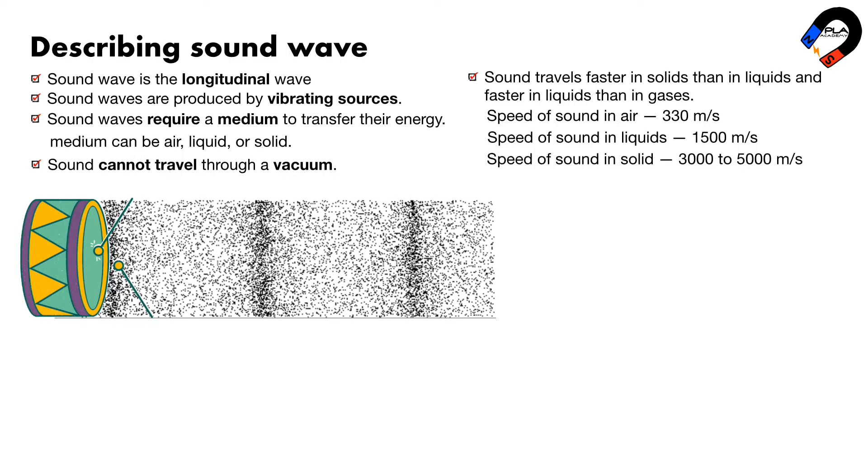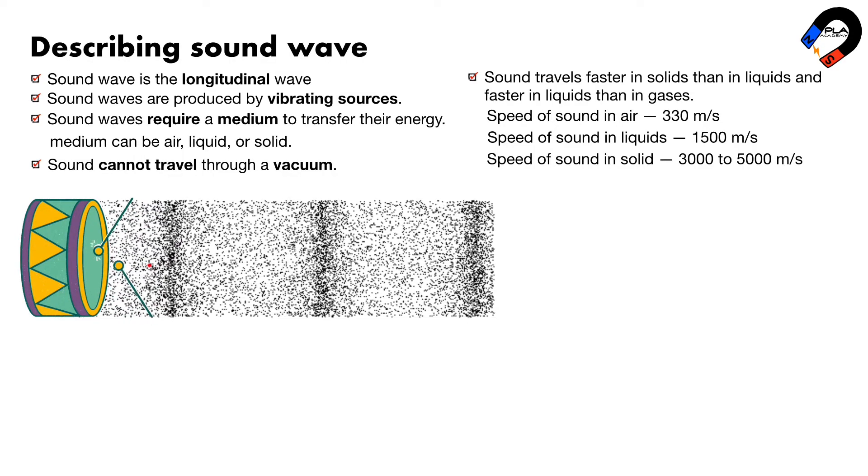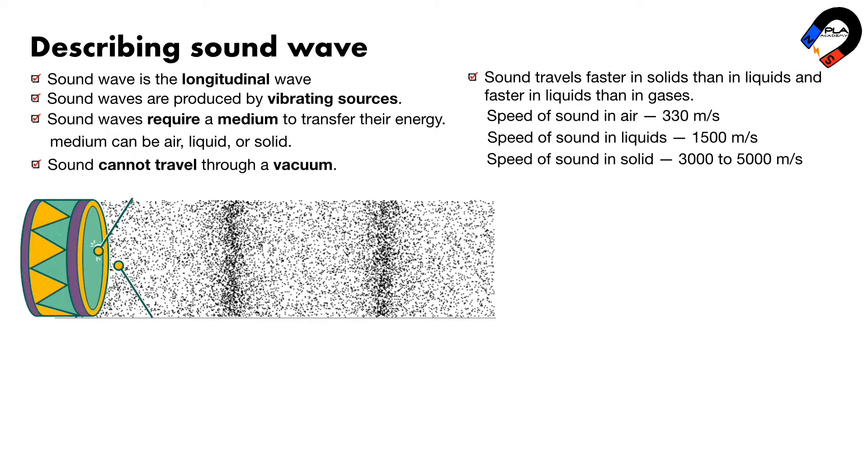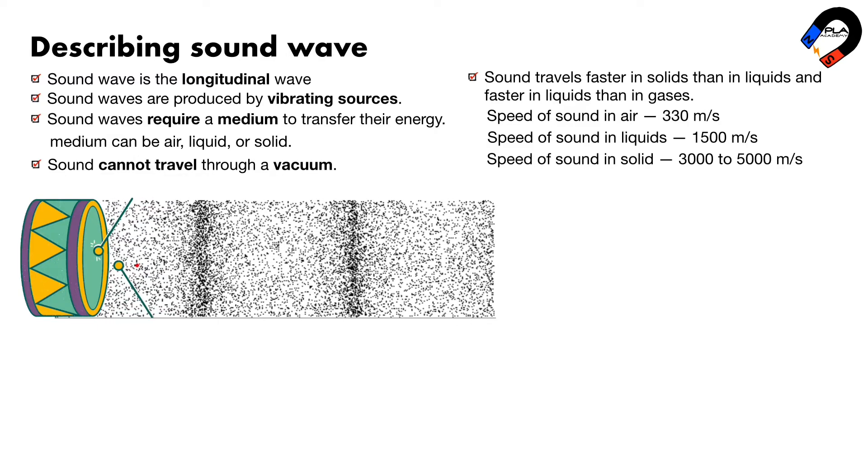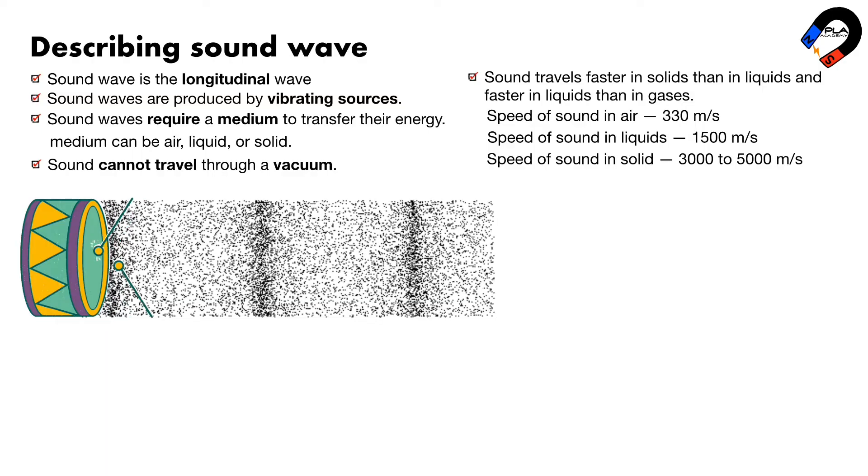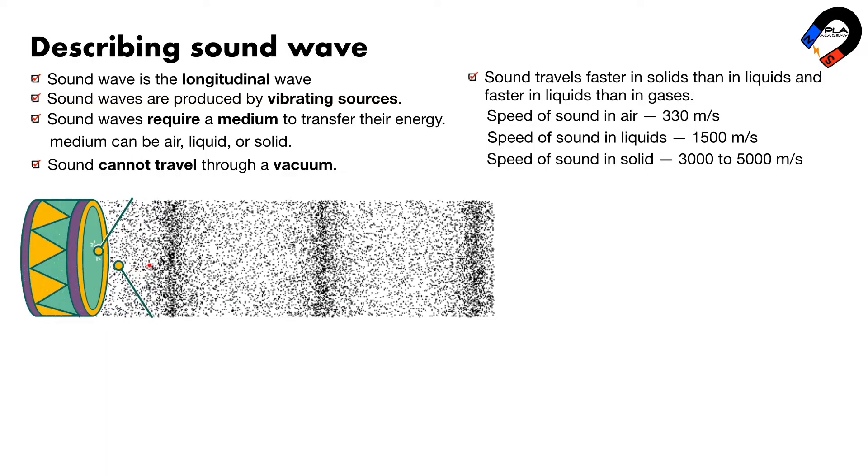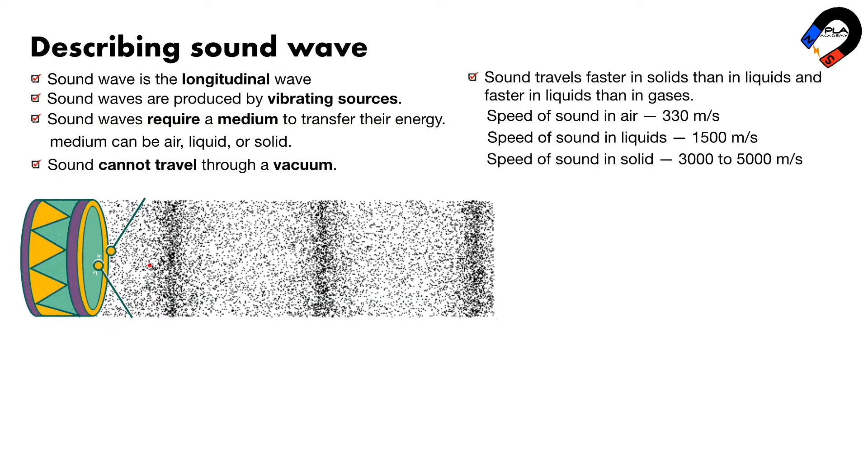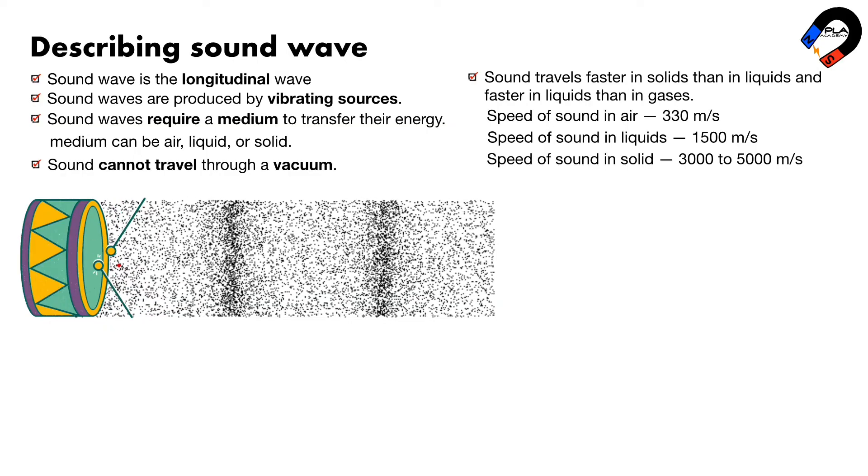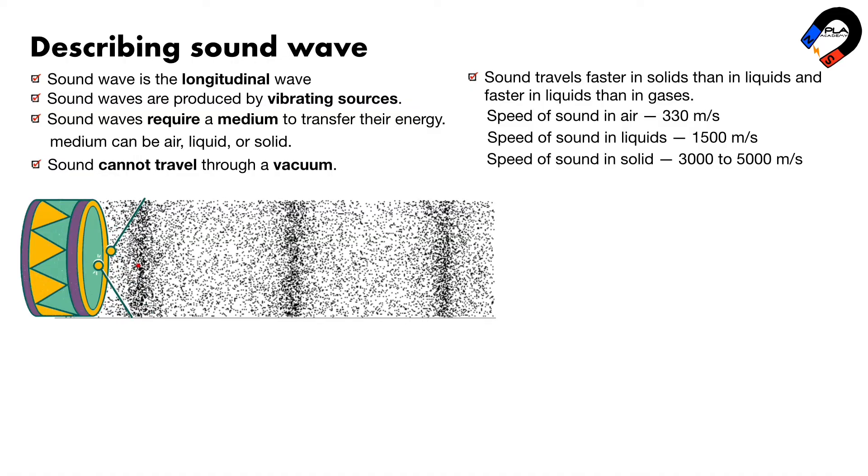The explanation of how a source, such as a drum, produces sound. When you bang a drum, the skin vibrates. The vibrating drum skin causes nearby air molecules to vibrate. This is because the air molecules are bumping into each other. The vibrating air molecules cause other nearby air molecules to vibrate, and so on.